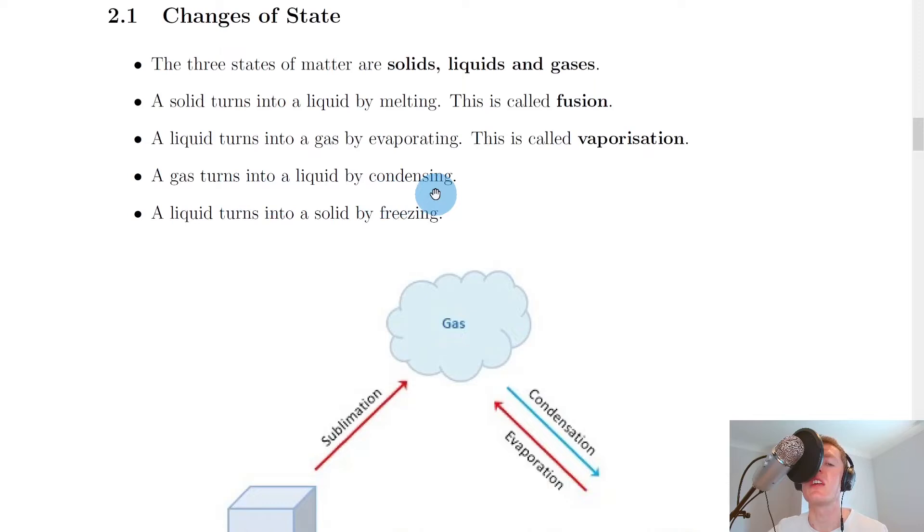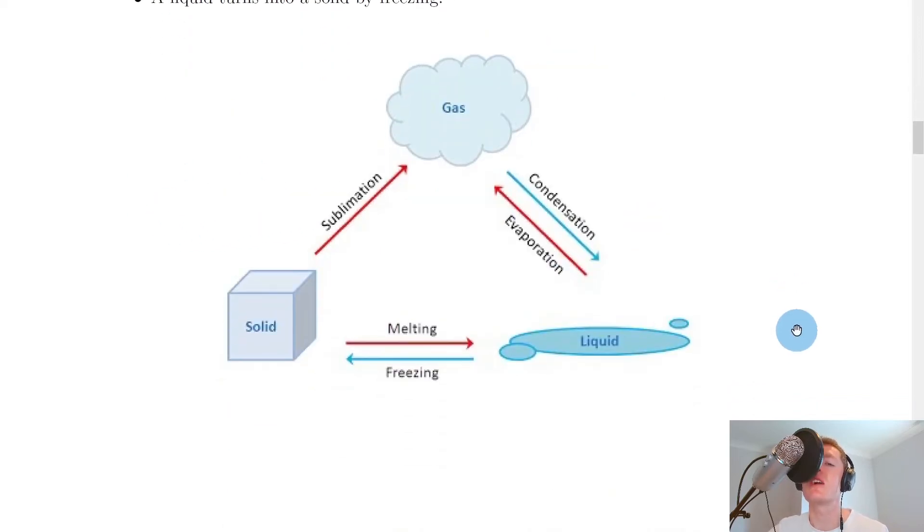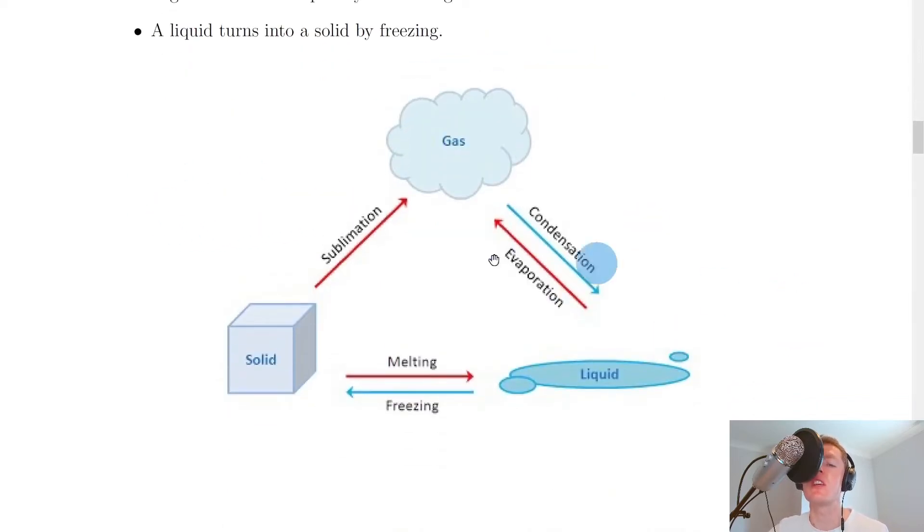And lastly we have a gas turns into a liquid by condensing and a liquid turns into a solid by freezing. So just to summarize this in the picture here, you can see that if we start off with a solid like an ice cube and it melts, then it's going to form a liquid, i.e. water. But if we take that water and we want to create ice cubes with it and put it in the freezer, then it's going to undergo freezing to become a solid again.